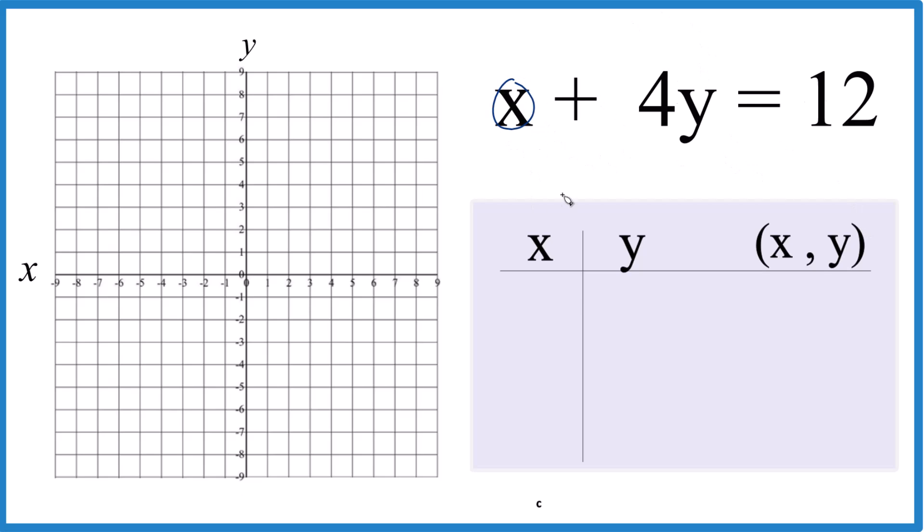So I could say x is 0. If x is 0, then 4y equals 12. Divide both by 4. So that's 1, and 12 divided by 4 is 3. So y would be 3. That's our first point. And I chose 0 because I want whole numbers and I want a point that works and fits on our graph paper.